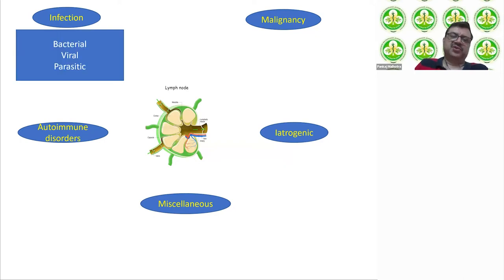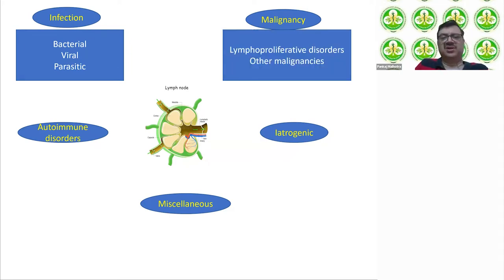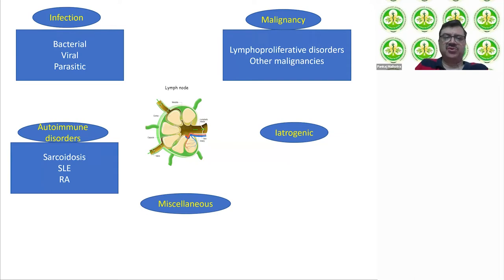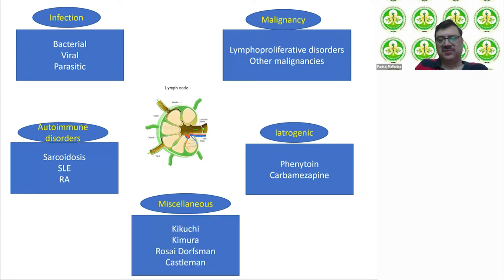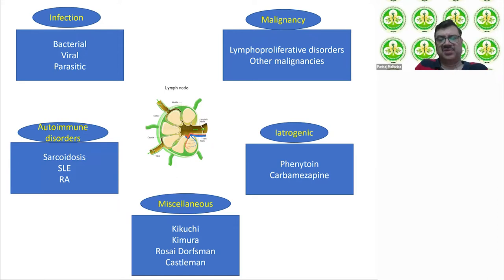For infection, consider whether it is bacterial, viral, or parasitic. For malignancies, whether it is hematological or a solid tumor. Autoimmune disorders include sarcoidosis, SLE, rheumatoid arthritis, and dermatomyositis. Iatrogenic causes are mostly due to drugs. Miscellaneous includes atypical lymphoproliferative disorders like Kikuchi, Kimura, Rosai-Dorfman, and Castleman disease among others.